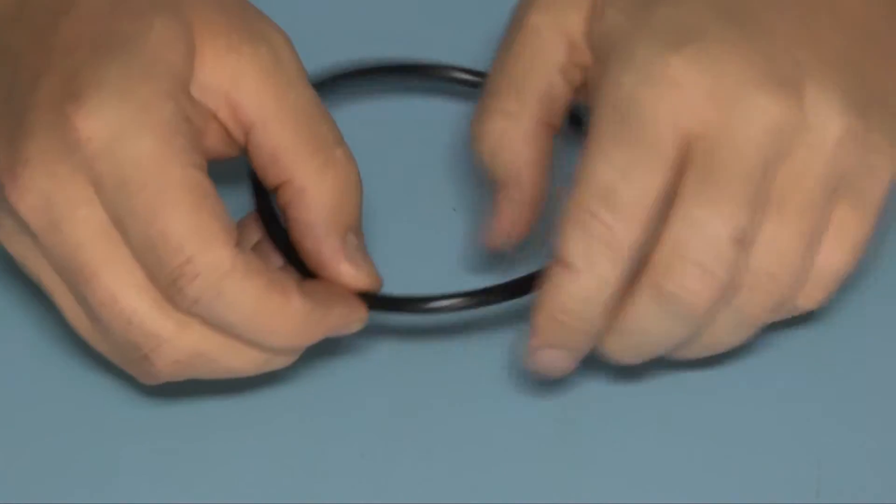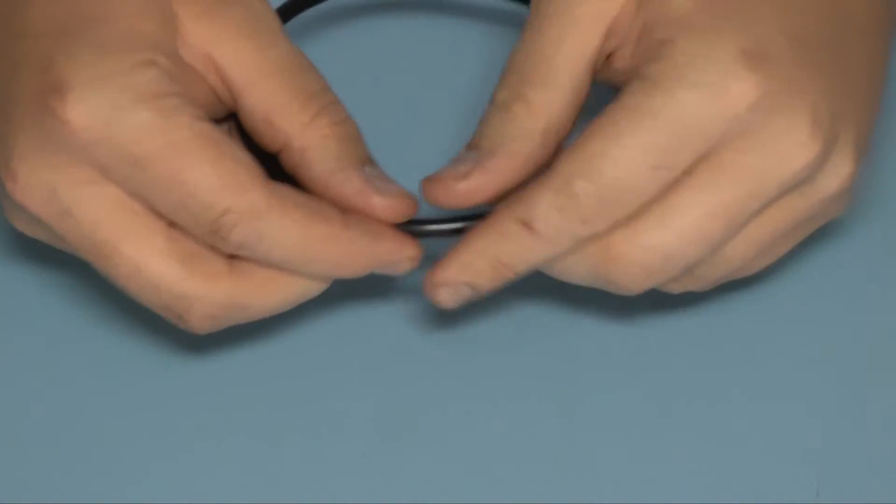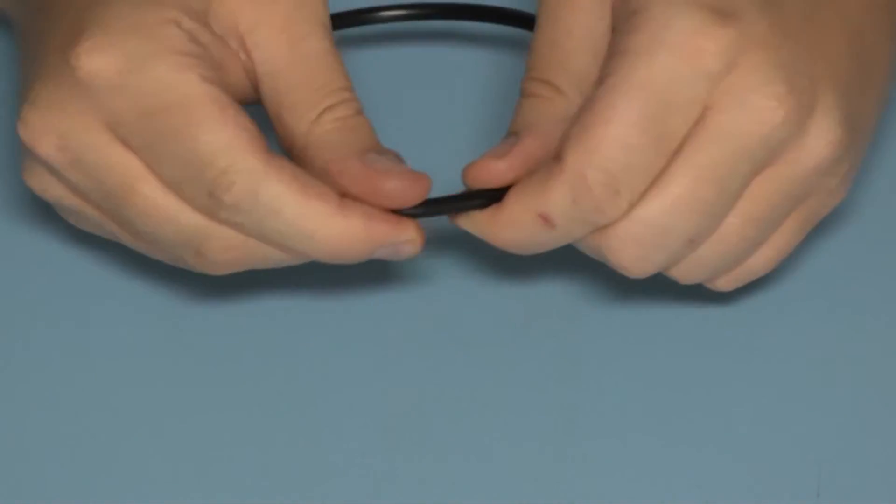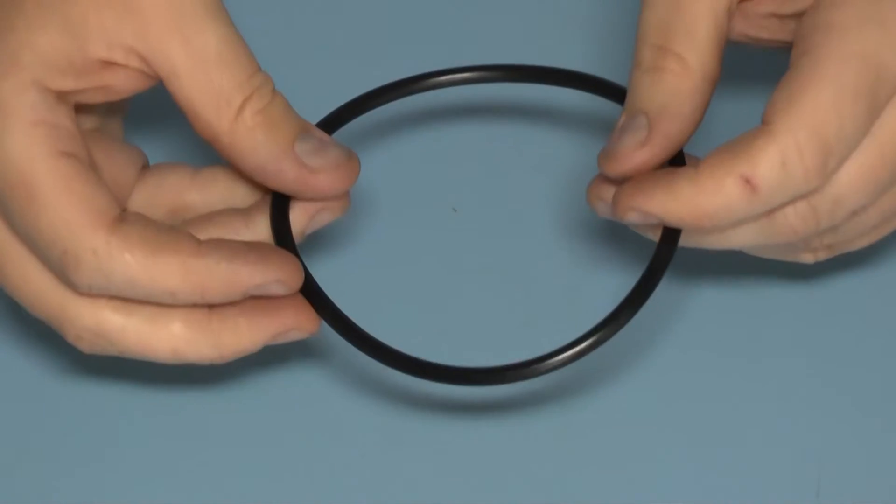Perform a thorough visual inspection of the o-ring, looking for any signs of damage. Even the slightest nick or imperfection can cause a leak. This o-ring looks fine, so I'm going to set it aside on a clean surface.